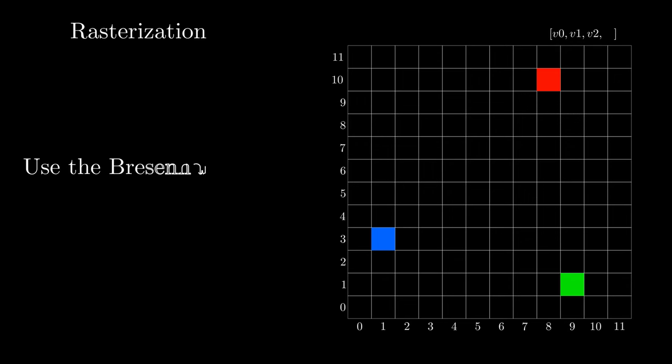To rasterize our polygon, we are going to apply the Bresenham algorithm. The Bresenham algorithm allows us to draw pixel lines between two points.